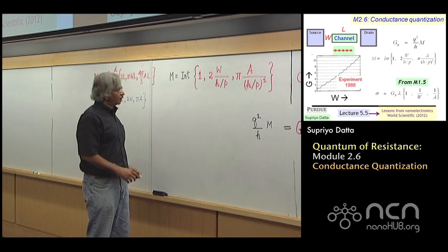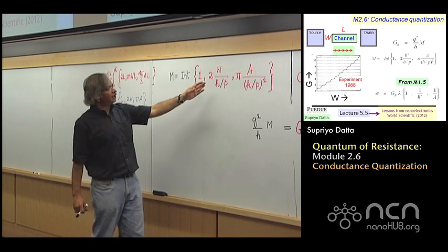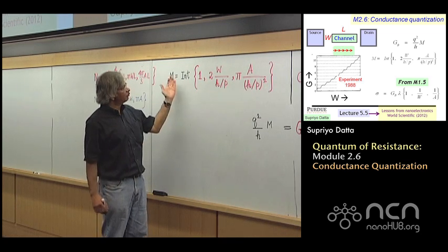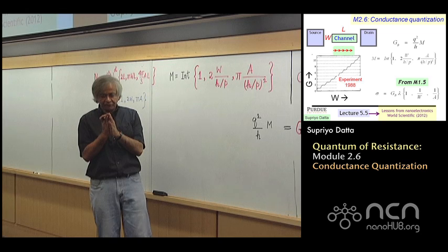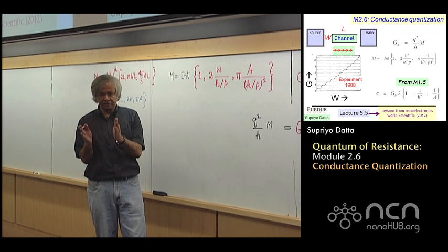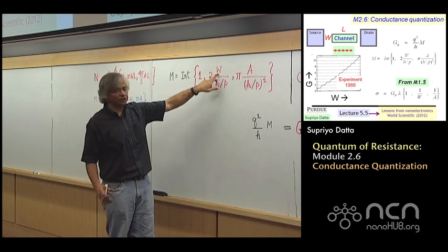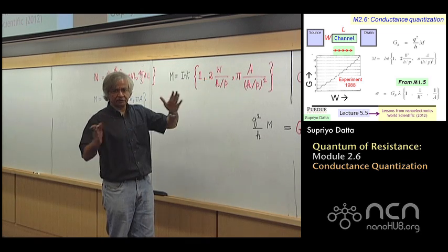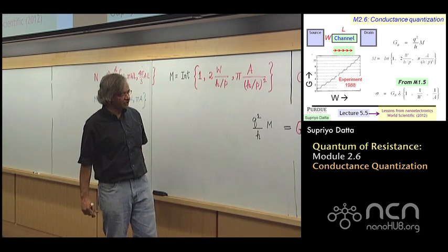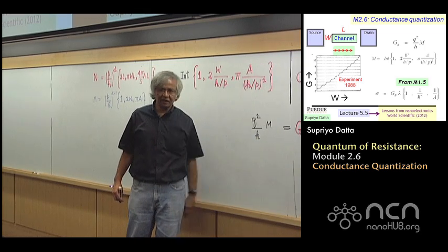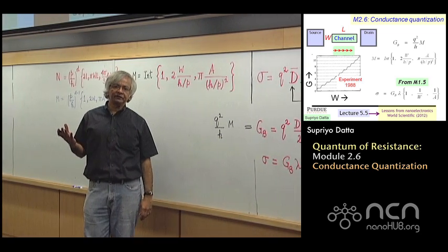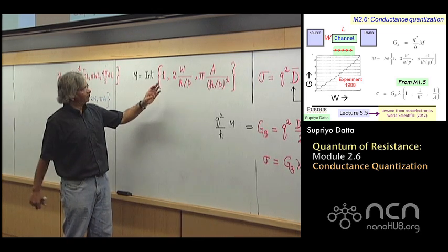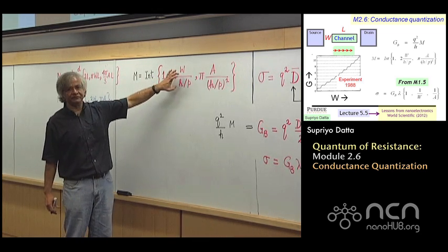And then I argued that these things in two dimensions and three dimensions, you would think, would change continuously. That if I made the conductor wider and wider, this number should increase proportional to the width continuously. And in that case, you would expect that the ballistic conductance should also be proportional to the width.